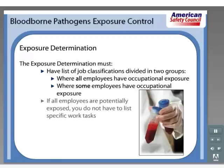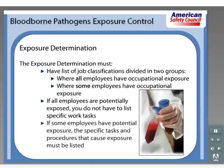If all employees are potentially exposed to bloodborne pathogens, you do not have to list specific work tasks. If some employees have potential exposure, the specific tasks and procedures that cause exposure must be listed. A list of all tasks and procedures, or groups of closely related tasks and procedures in which occupational exposure occurs and that are performed by employees in job classifications, must be listed in accordance with OSHA regulations.